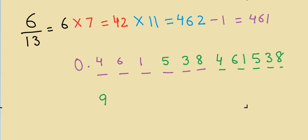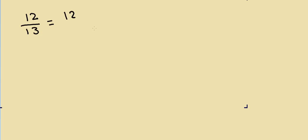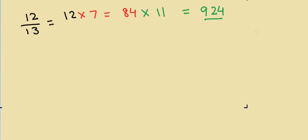Now let's take another example: 12 divided by 13. First, I take 12 and multiply by 7: 12 times 7 is 84. Then I multiply 84 by 11. Taking 8 and 4, 8 plus 4 is 12, so carry 1, giving 9, and the answer is 924.